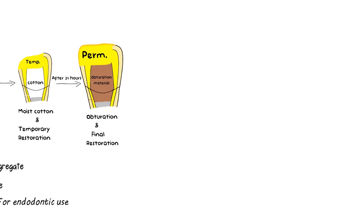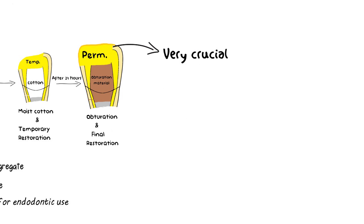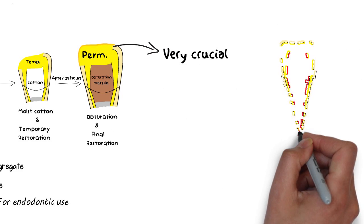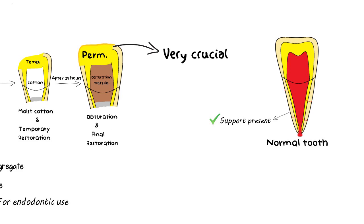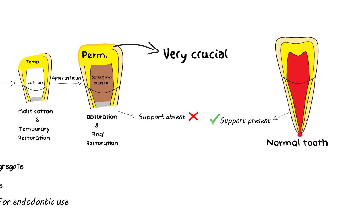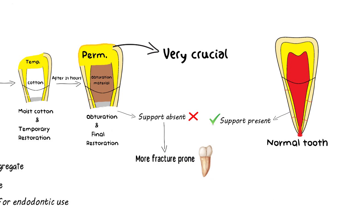The final restoration after apexification is very crucial because, unlike normal teeth which have a developed root and dentine to support them, the underdeveloped necrotic teeth don't have completely formed roots and lack this support. Therefore, fracture is very likely in these underdeveloped teeth, and the final restoration should be made very tough and resilient.